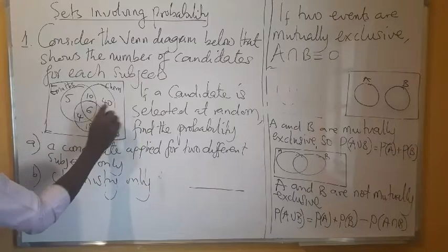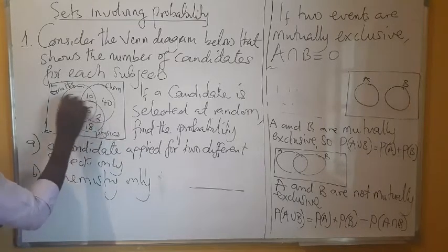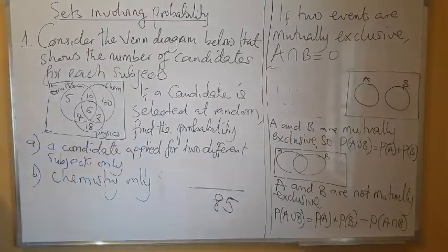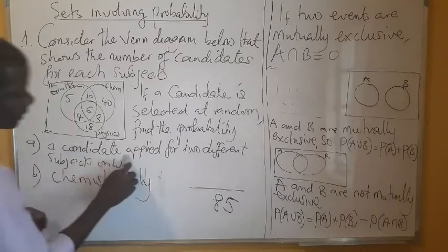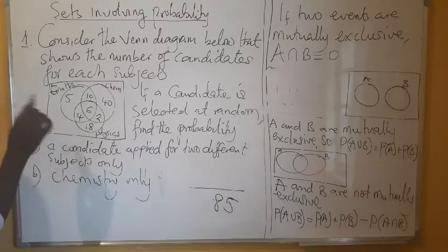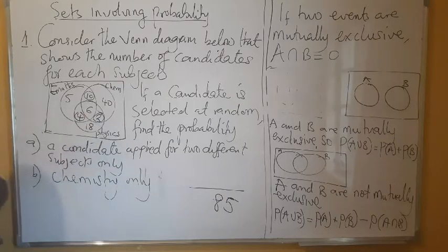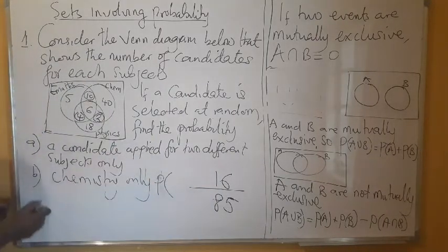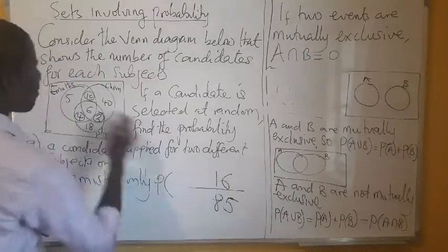We have 60, 80, 85 — 85 is the total number of people. So that must be our sample space. Then now we look at the favourable outcomes — the candidates that applied for two subjects only. How many are they? The candidates that applied for two subjects only are these ones: 10, 4, and 2. So when you add this, you find that you are going to have 16. So this is the probability of candidates that applied for two subjects only — 16 over 85. The only difference is that in the denominator we have the total number of candidates under consideration.